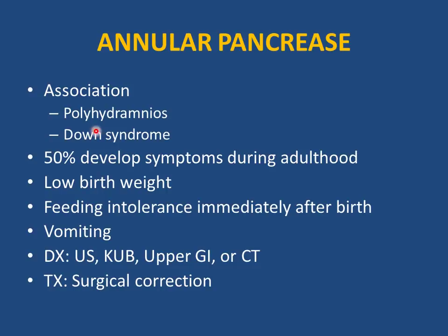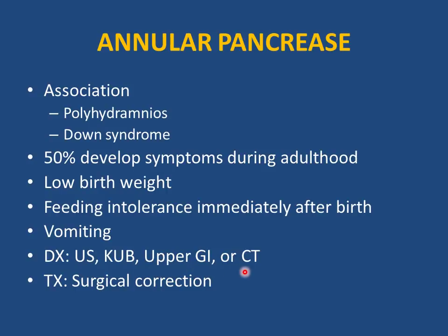Annular pancreas is commonly associated with polyhydramnios on prenatal history and Down syndrome. Any obstruction — esophageal atresia, antral web, duodenal atresia — may have a history of polyhydramnios. 50% develop symptoms during adulthood. Low birth weight and feeding intolerance present immediately after birth with vomiting. Diagnosis: ultrasound, KUB, upper GI, or CT scan. Treatment is surgical correction.